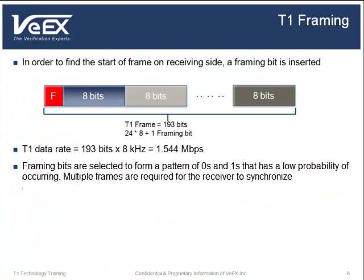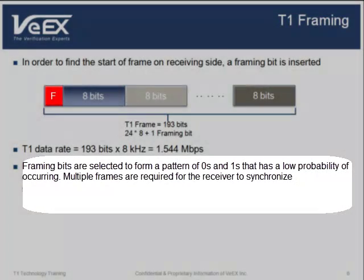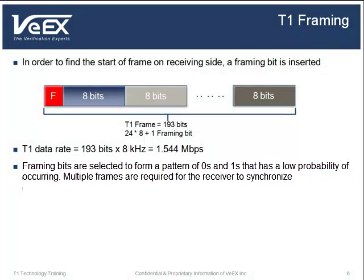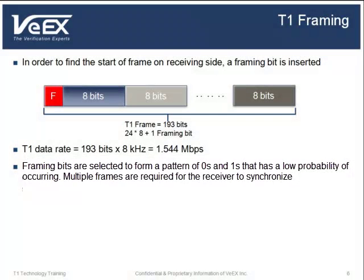In order to identify the beginning of the multiplexed stream — that is, time slot 0 — on the receiving side, a framing bit is inserted. The basic T1 frame is 193 bits long, with 8 bits for each of the 24 channels, and 1 bit for framing. This results in a T1 data rate of 193 bits transmitted at 8 kHz, equivalent to 1.544 Mbps.